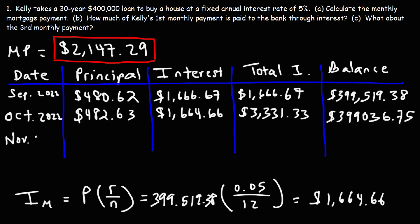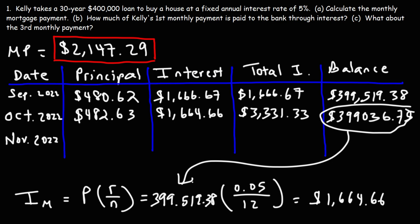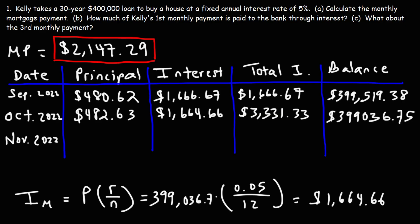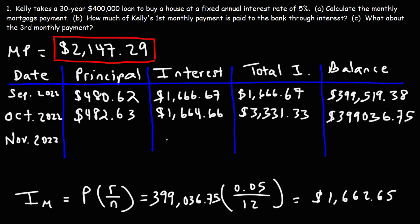For the third month, we take the remaining balance of $399,036.75 and plug it into the interest formula — multiplying by 0.05 divided by 12. That gives us a new interest payment of $1,662.65.